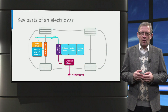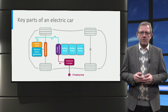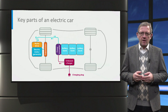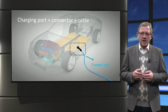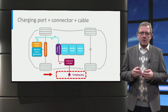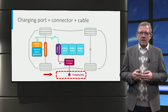The schematic shows how the different components are connected to each other in the electric car. To explain what is inside an electric car, let us follow the power flow direction and identify the key components. The first part we look at is the charging port with charging connector and cable. The charging port together with the connector and cable allows the electric car to connect to an external power supply in order to charge the traction battery pack. The charging port is often referred to as a vehicle inlet.